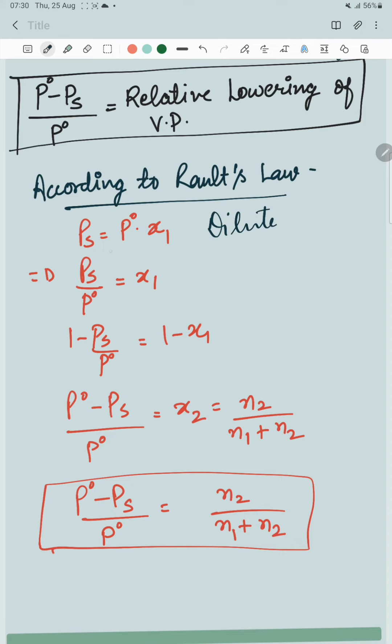PS is equal to partial pressure, which equals P0 times X1. And then it becomes this relation: P0 minus PS upon P0 is equal to X2.